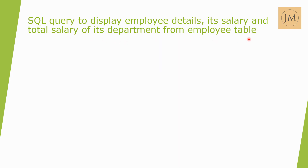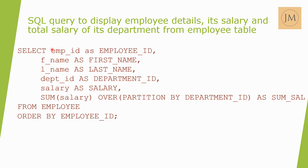We need to fetch employee details, individual salary, and the total salary of each employee's department. We use the SUM function with the OVER clause: SUM(salary) OVER (PARTITION BY department_id). The OVER function provides a window to apply an analytical function — here SUM — partitioned by department_id.